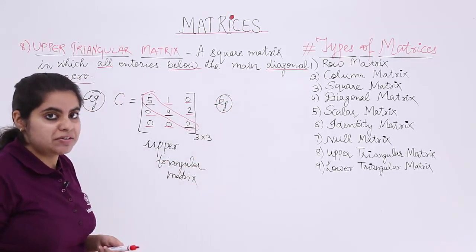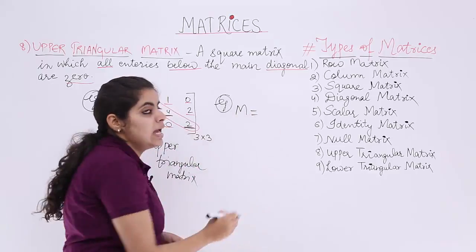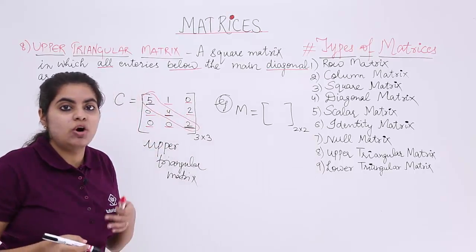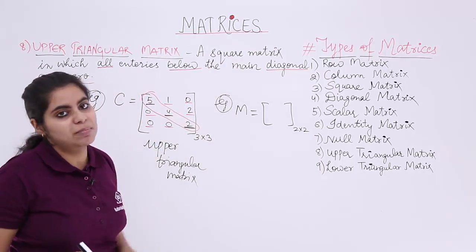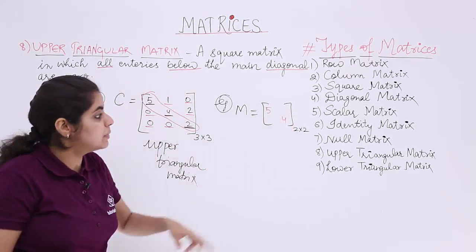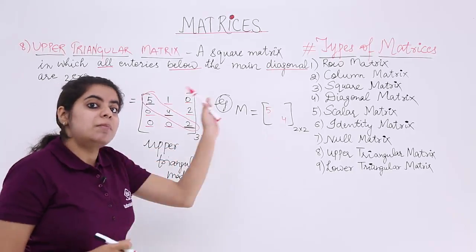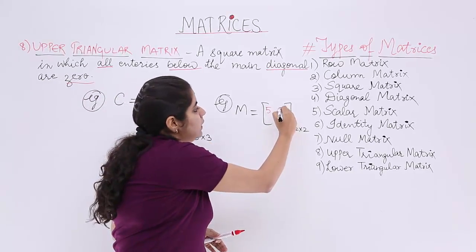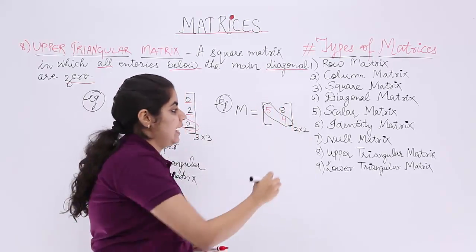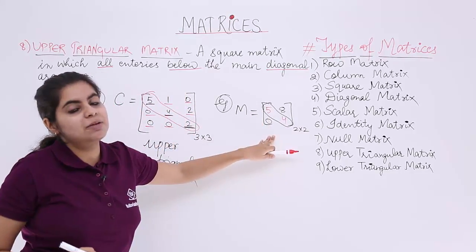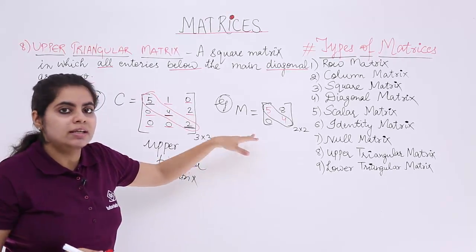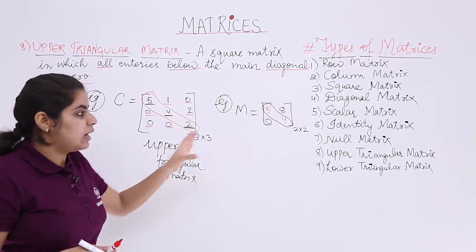I have again a matrix, say it is M, and this M matrix is a 2 by 2 matrix. It cannot be a 2 by 3 or 3 by 4 matrix because it has to be a square matrix. The elements are given to me as 5 and 4 for the diagonal. The element above the diagonal is 8, below the diagonal is 0. Since the element below the main diagonal in a square matrix is 0, it is an upper triangular matrix. And now you have understood.